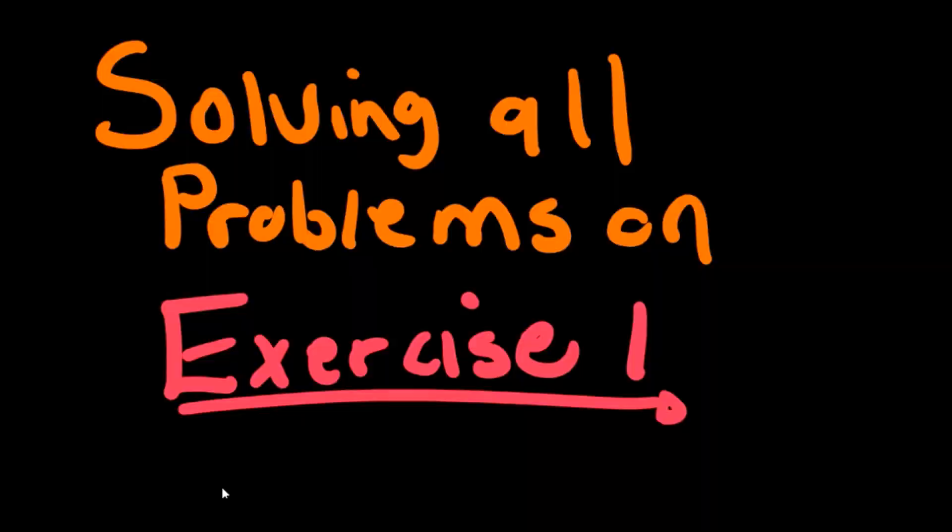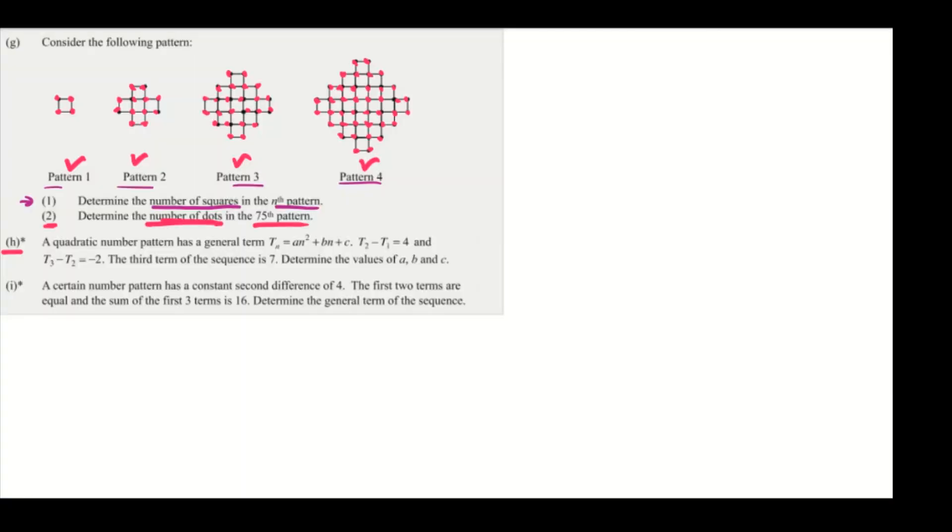Problem H says that a quadratic number pattern has a general term Tn equals an² plus bn plus c. Then T₂ minus T₁ equals 4, which is the first part you are given. T₃ minus T₂ equals -2, which is what you're given here.